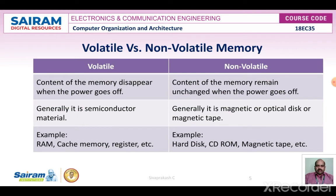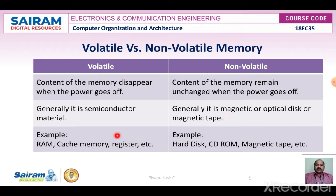Volatile versus non-volatile memory: volatile memory is one in which the content of the memory disappears when the power goes off, whereas non-volatile memory content remains unchanged when the power goes off. Volatile memories are generally made up of semiconductor material, whereas non-volatile memories are magnetic tape or optical disc. Examples of volatile memory are RAM and cache memory, whereas non-volatile memories include hard disk, CD-ROM, and magnetic tapes.